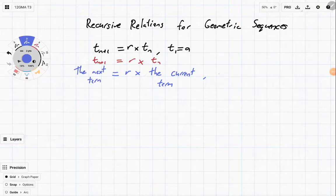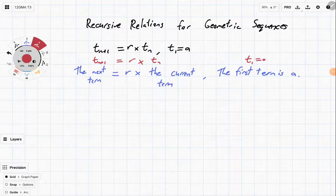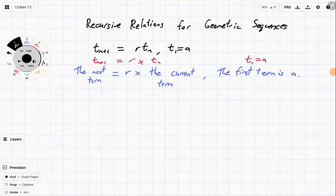And just as a reminder then we have where the first term is a, which is what this last bit over here says, t_1 equals a. So this is our recursive rule for a geometric sequence.